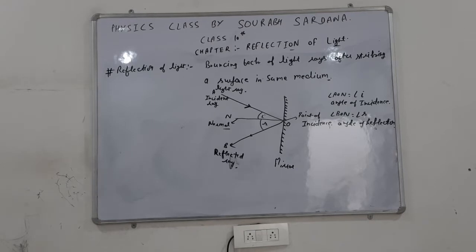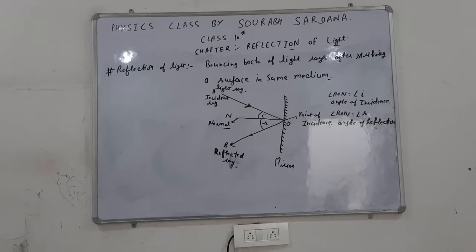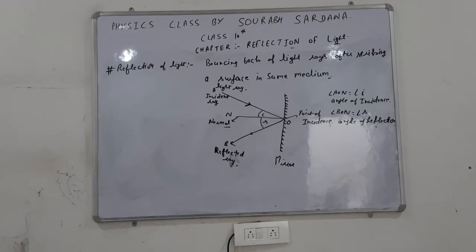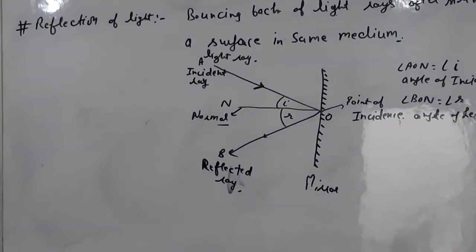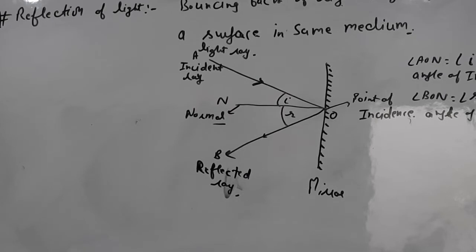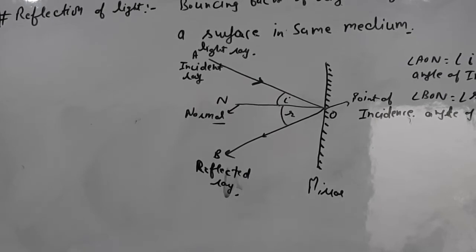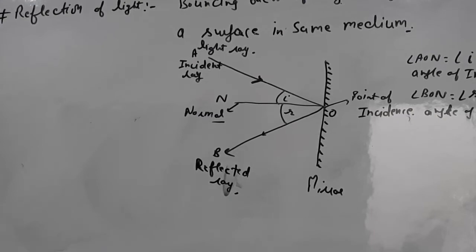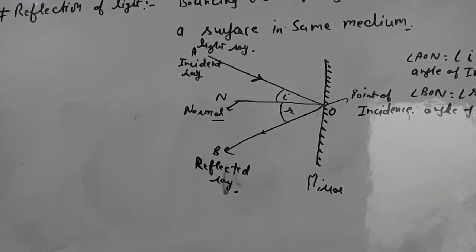Incident ray AO is called the incident ray of light. The point where the ray strikes the mirror is the point of incidence O. Due to reflection, the mirror sends the ray back — OB is the reflected ray. A perpendicular drawn on the mirror surface at the point of incidence O is the normal ON. The angle between incident ray and normal is the angle of incidence. The angle between reflected ray and normal is the angle of reflection. Bouncing back of light rays after striking a surface in the same medium — that is called reflection of light.